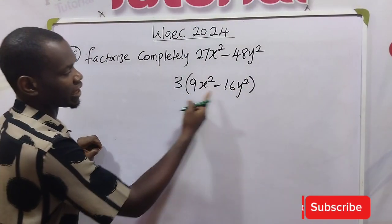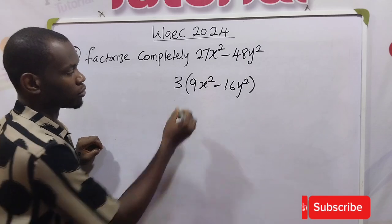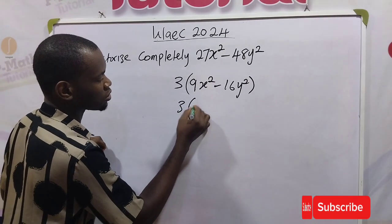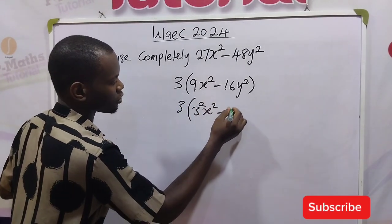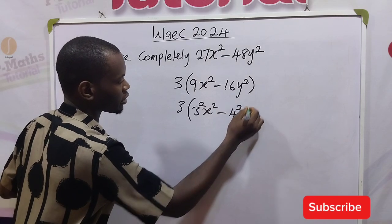Then the next thing we do is to write 9 and 16 in their index form. So we have 3 times 3 raised to the power 2 x squared minus 4 raised to the power 2 y squared.